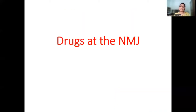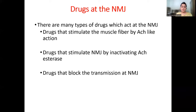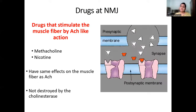Now that we've learned the neuromuscular junction and the transmission process, we'll look at drugs acting at the neuromuscular junction, which are very relevant to clinical applications. There are different types: first, drugs that stimulate the muscle fiber with an acetylcholine-like action; second, drugs that stimulate by inactivating acetylcholinesterase, causing an abundance of acetylcholine; and third, drugs that block neuromuscular transmission.